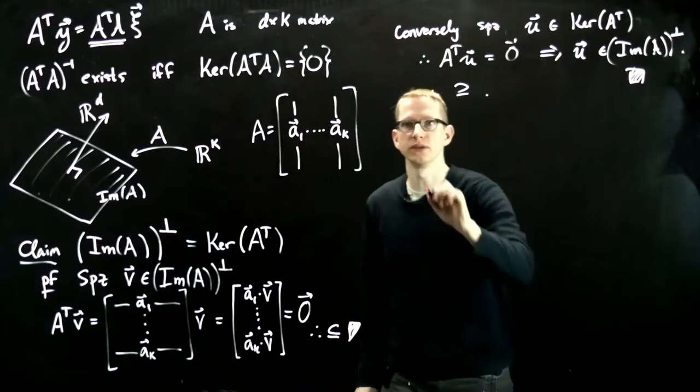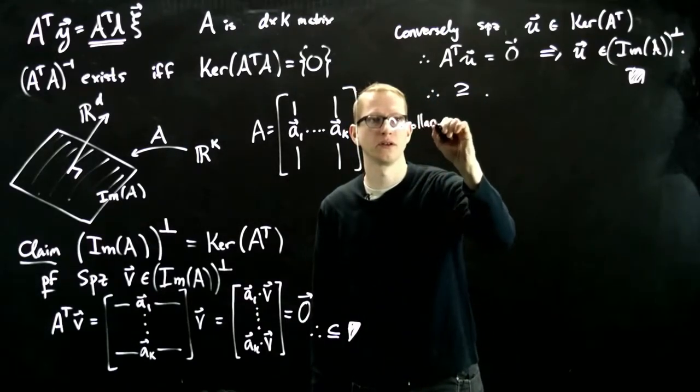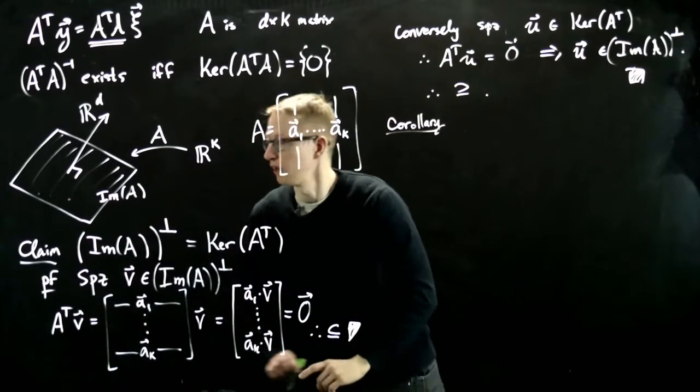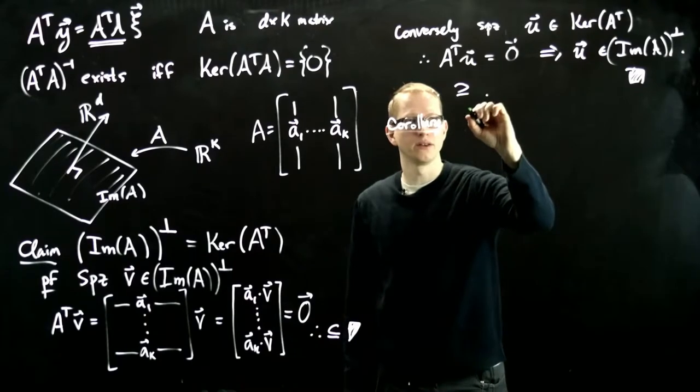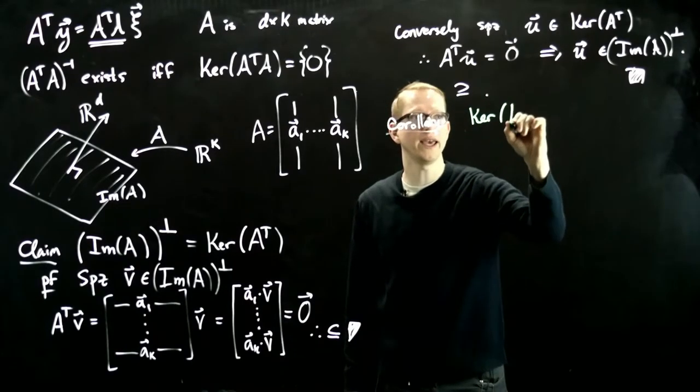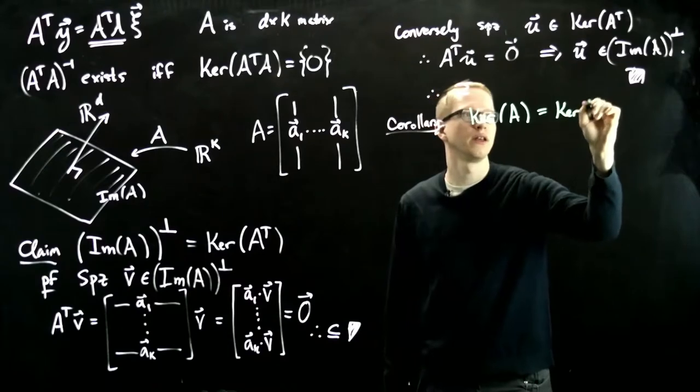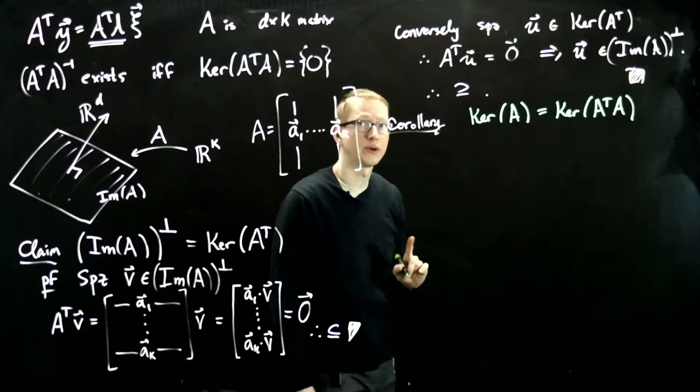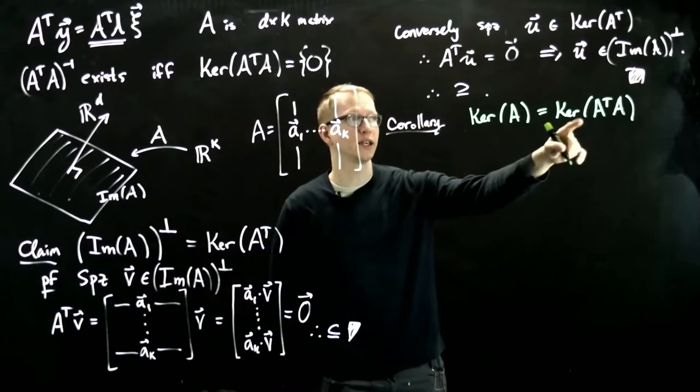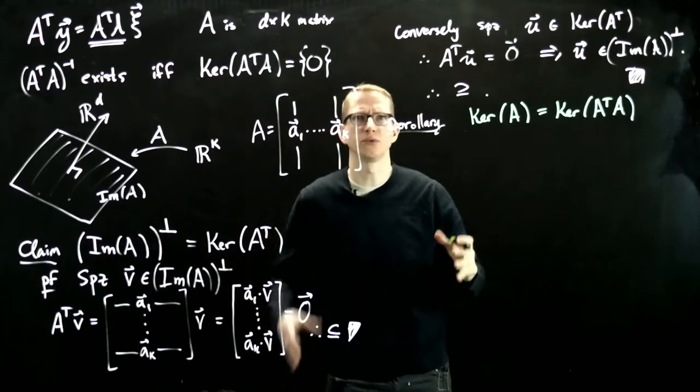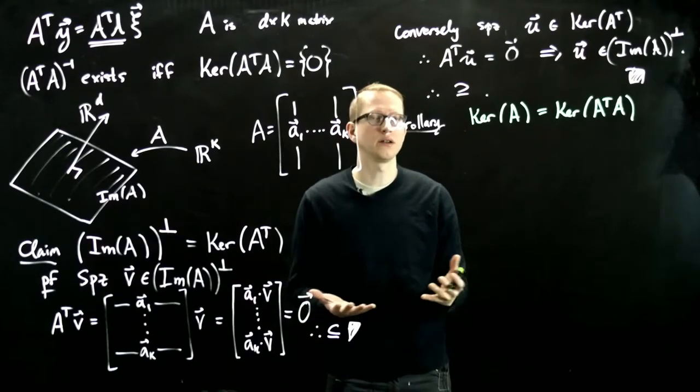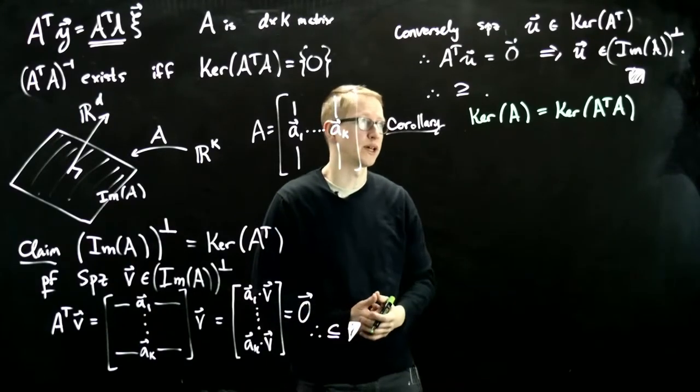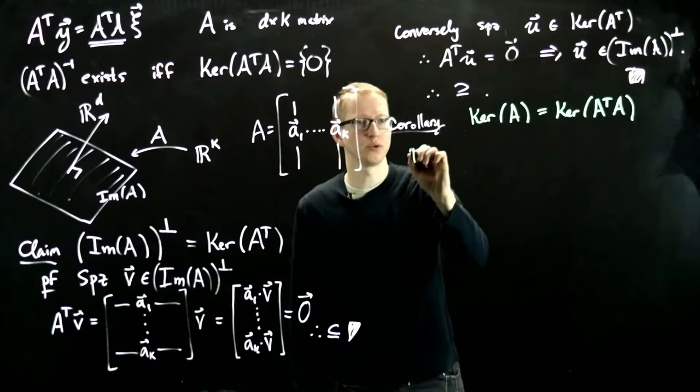Why is this useful? It's useful for the following very important reason. And it says that the kernel of A equals the kernel of A transpose A. You can already see why this is going to be useful, because instead of looking at the kernel of A transpose A, which we take two matrices and multiply them, if we could just look at the kernel of A, that would probably save us some time.